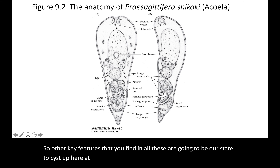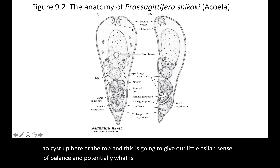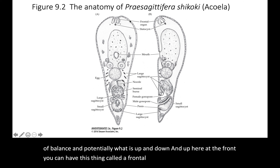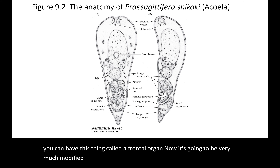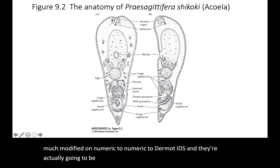Other key features found in all of these are the statocyst up at the top, which gives the little Acoela a sense of balance and tells it what is up and down. Up at the front there's also a frontal organ, which is very much modified in the Nemertodermatida — they can actually evert and stick out their frontal organ, and it looks like a bunch of little spikes coming out the front.